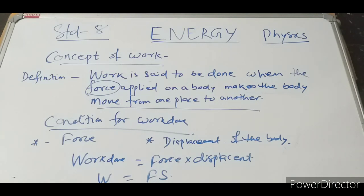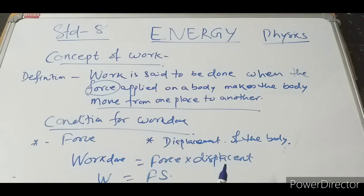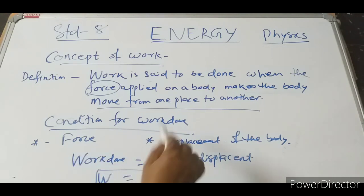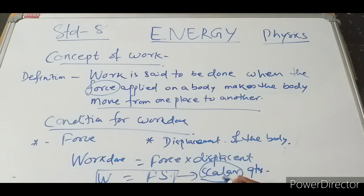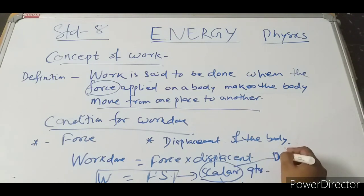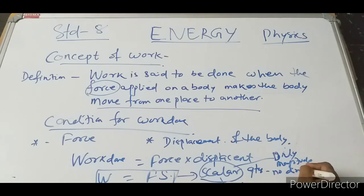The condition is force must be acting on the body and there should be a change in position. Whenever there is a change in position, that is known as displacement of the body. The formula is W equal to F into S. And remember, work done is always a scalar quantity, meaning it has only magnitude and no direction.